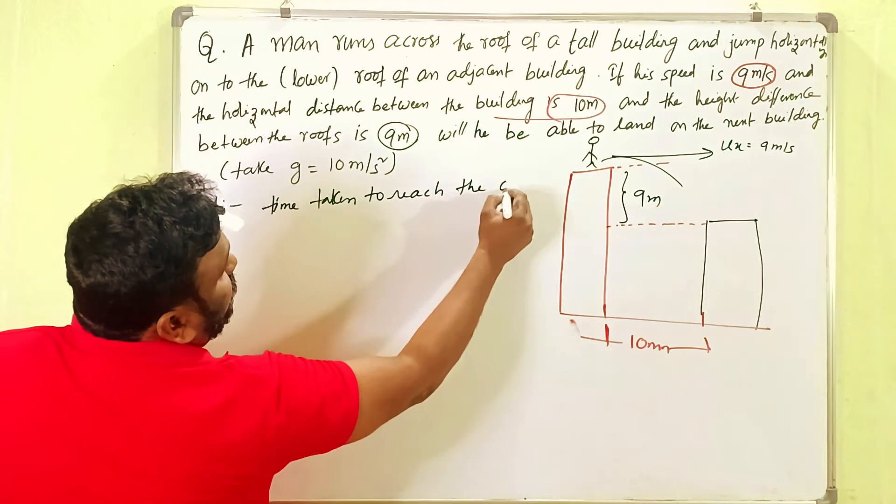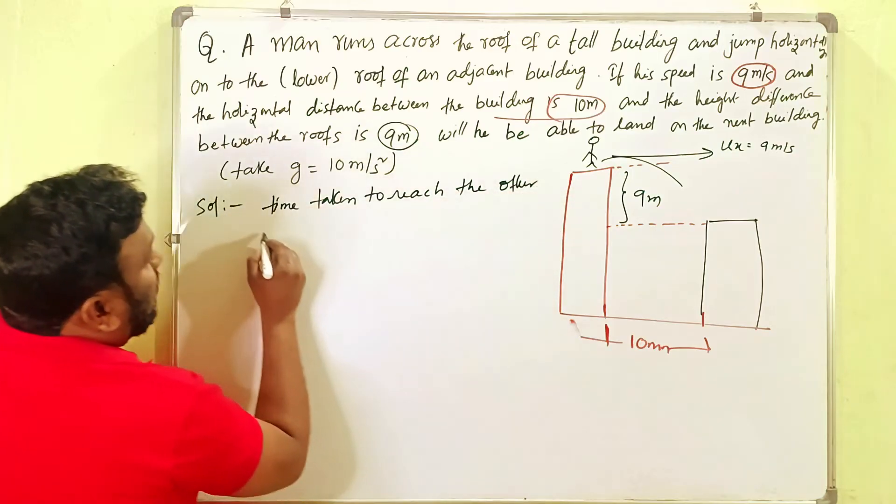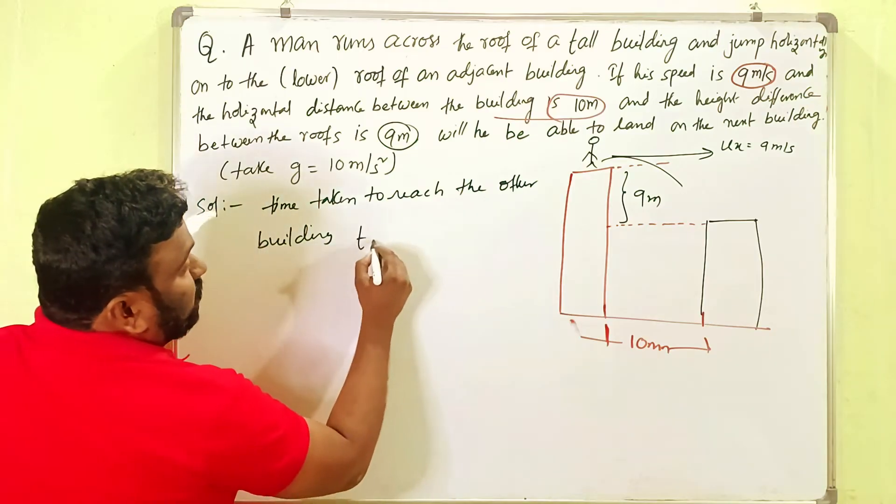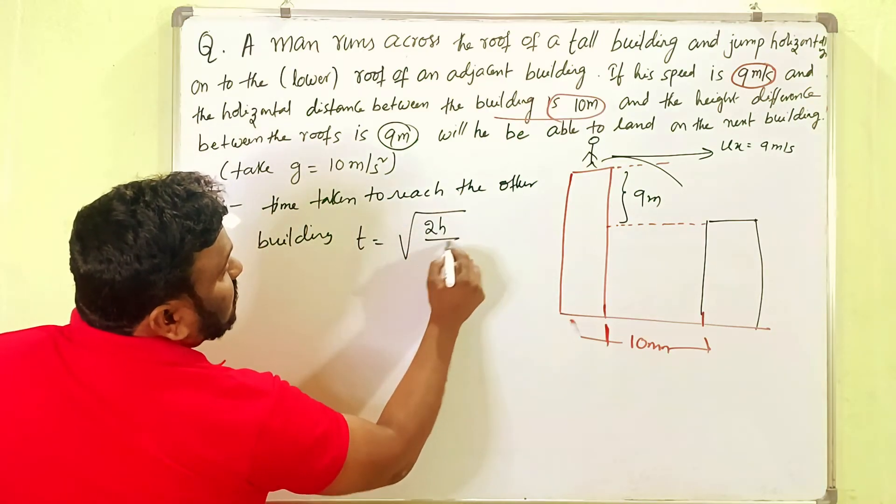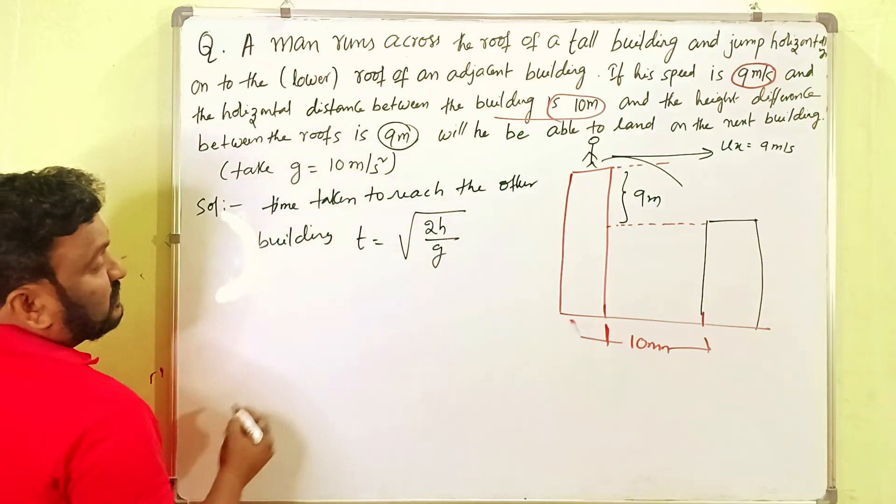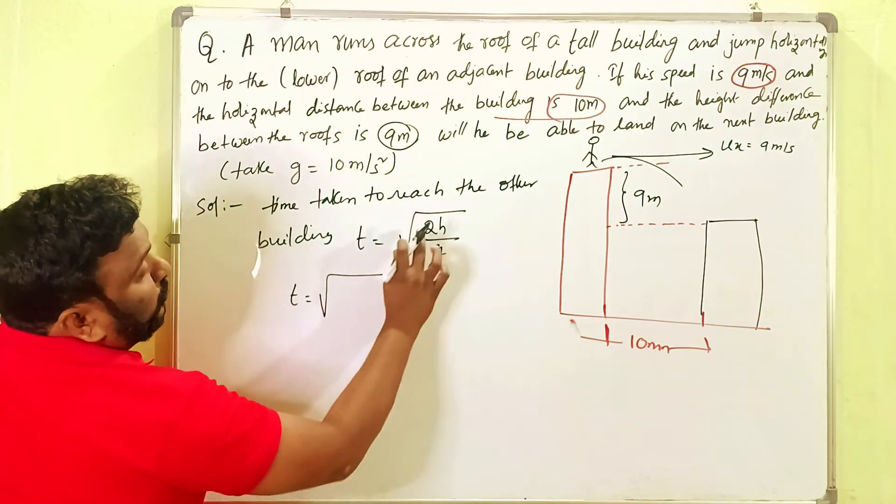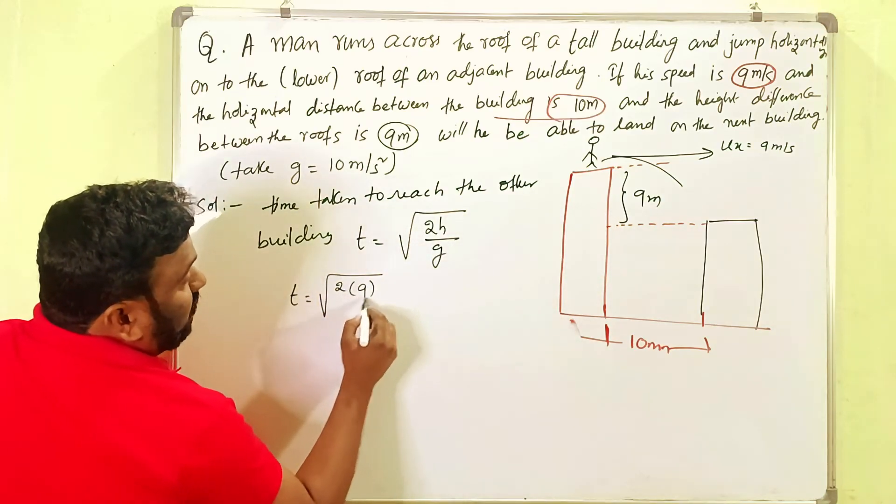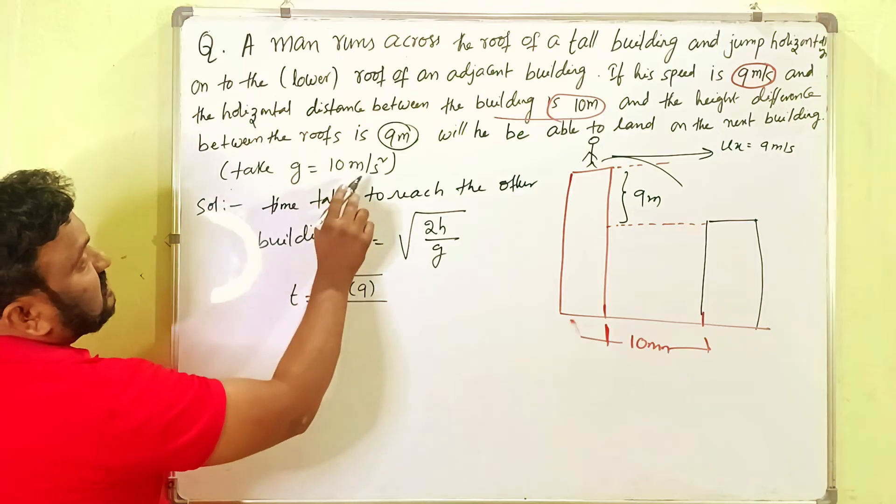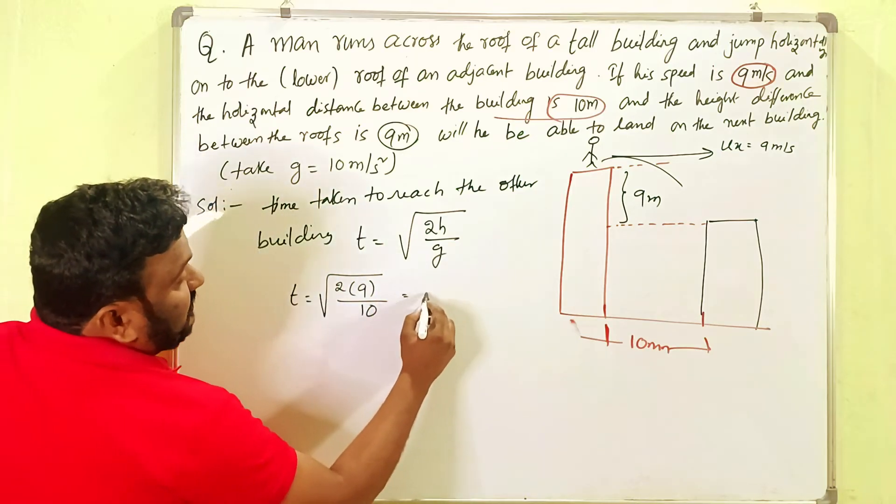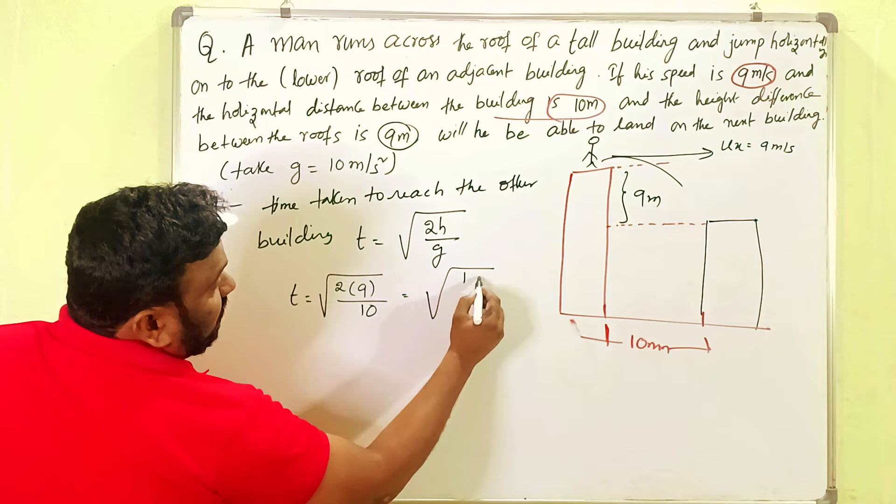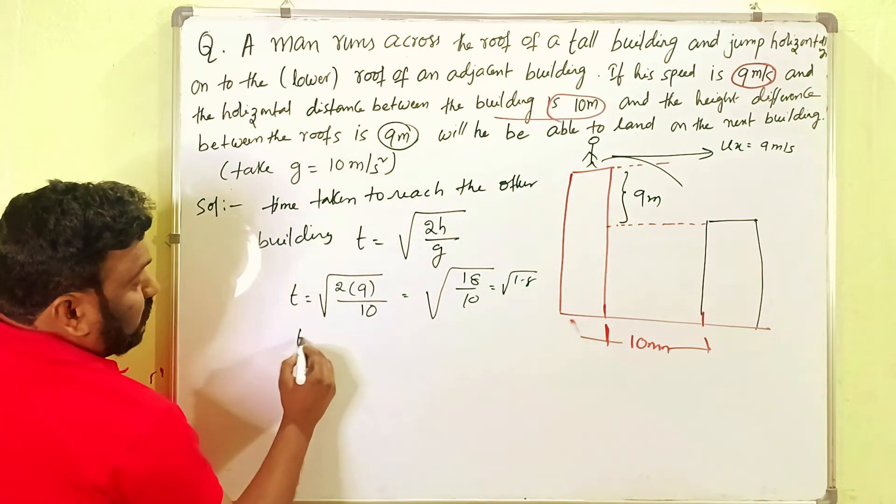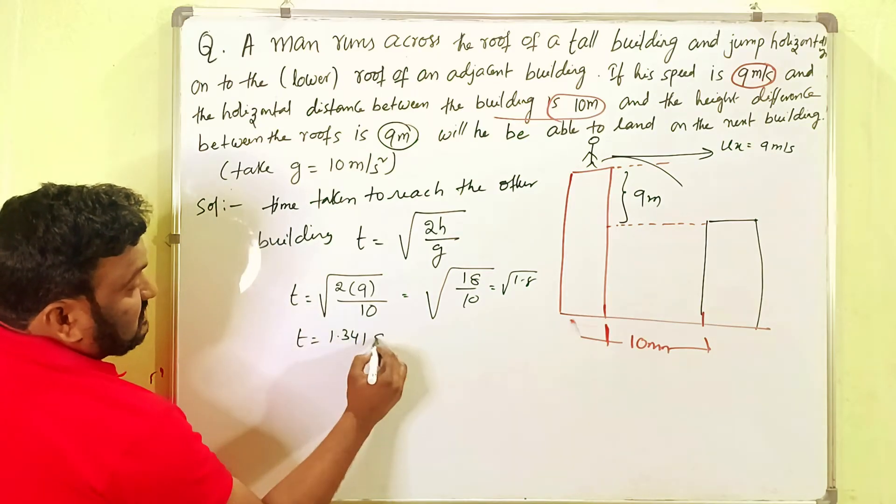That is given by the formula T equals square root of 2H by g. So T equals square root of 2 into 9 by 10, which equals square root of 18 by 10, which is 1.8. So this value is 1.341 seconds.